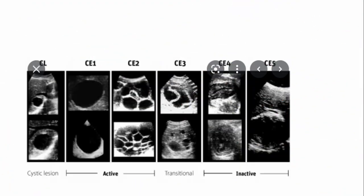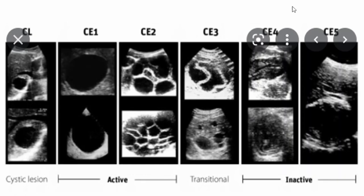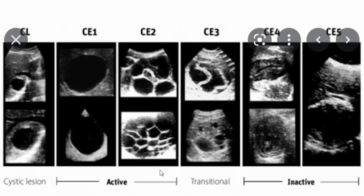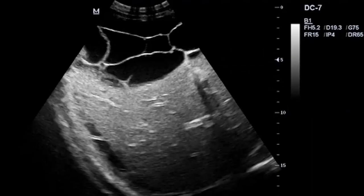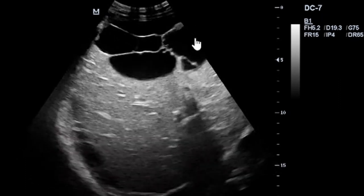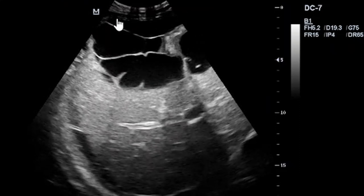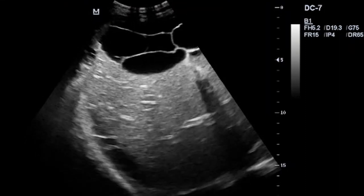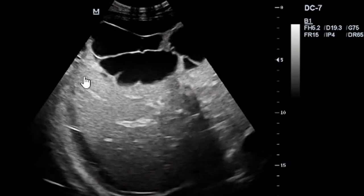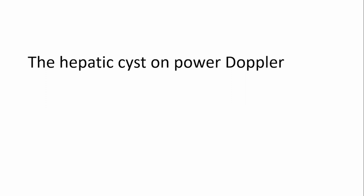Following the previous demonstration, you can see this corresponds to CE2 classification — our echinococcus cyst was in the active stage, resembling the fishnet or honeycomb appearance. The cyst had septations affecting what appeared to be segments seven and eight in that region. Let me play it again so you can see the hepatic cyst on power Doppler.